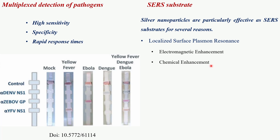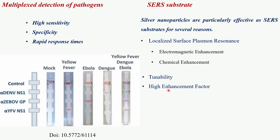Another reason silver nanoparticles are used as SERS substrates is their tunability. The optical properties of silver nanoparticles can be tuned by varying their size, shape, and surrounding medium, allowing optimization of the SERS substrate to match the excitation wavelength of the Raman spectrometer. Additionally, silver nanoparticles provide a high enhancement factor, often on the order of 10⁶ to 10⁸, meaning the Raman signal of a molecule can be amplified by up to a hundred million times compared to its normal Raman signal.